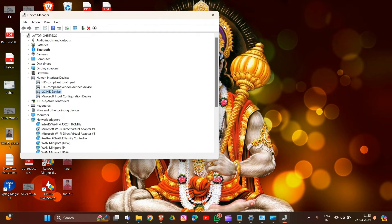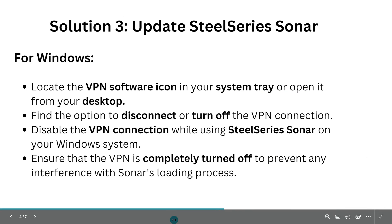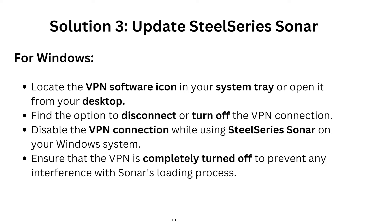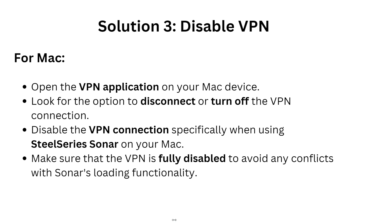The next solution is to disable your VPN. On Windows, locate the VPN software icon in the system tray or open it from the desktop, then find the option to disconnect or turn off the VPN connection. Ensure the VPN is completely turned off to prevent interference with Sonar's loading process. On Mac, open the VPN application, locate the disconnect or turn-off option, and disable the VPN when using SteelSeries Sonar to avoid any conflict with the loading functionality.